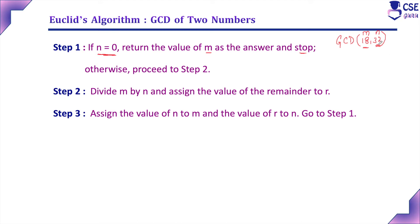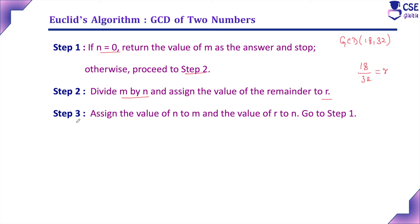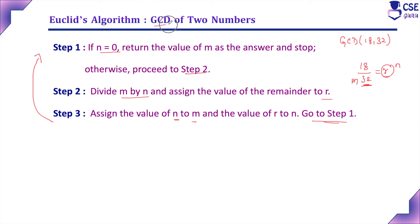Otherwise, if N is not zero, proceed to the next step. In step 2, divide M by N and assign the remainder to R. In step 3, assign the value of N to M, and assign the value of R to N, then go back to step 1. This procedure continues until the GCD of the two numbers is found.